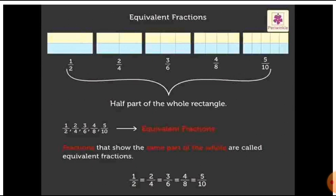Same part of the whole. So these are equivalent fractions. How we can write the definition of equivalent fractions? Fractions that show the same part of the whole are called equivalent fractions. That means 1 by 2 is equal to 2 by 4, which is equal to 3 by 6, which is equal to 4 by 8, which is equal to 5 by 10.